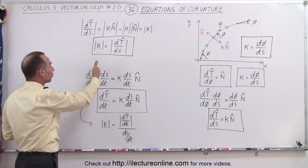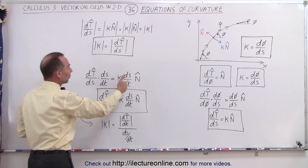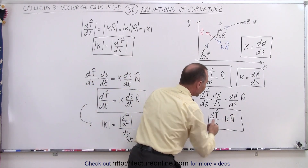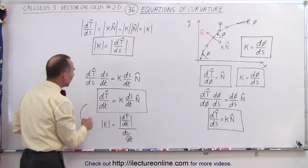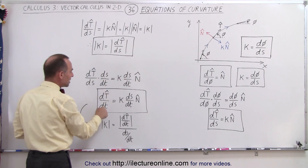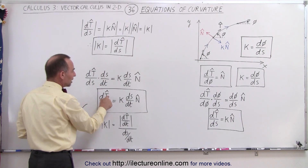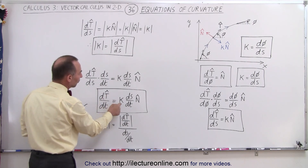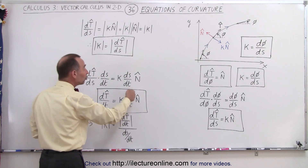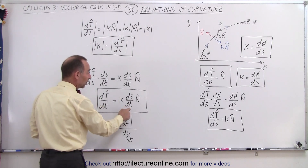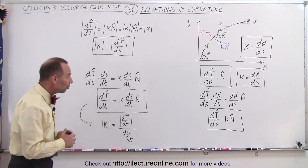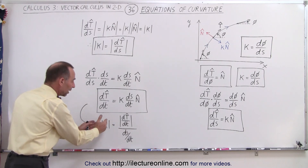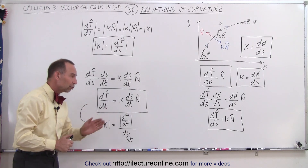To do that, we multiply both sides of the equation by ds/dt. The s's cancel out, so we get dT/dt — the direction of the tangent unit vector changing with respect to the parametric variable — equal to kappa times ds/dt times the unit normal vector. So we can express the absolute value of kappa in terms of this as well, giving us kappa expressed in terms of the parametric variable.